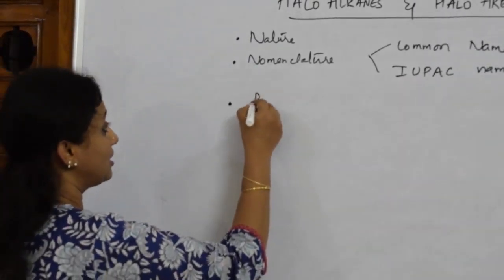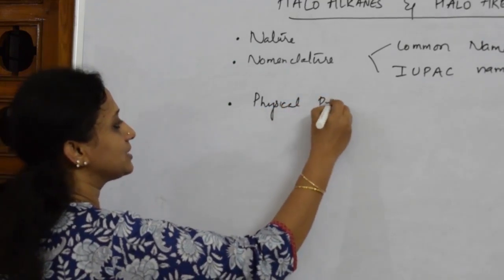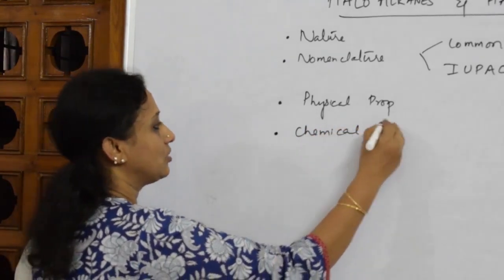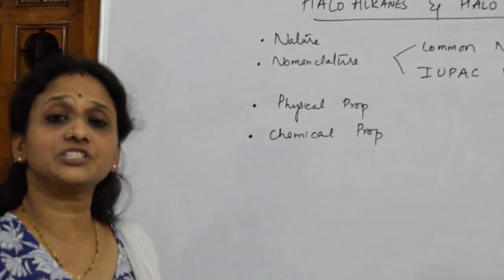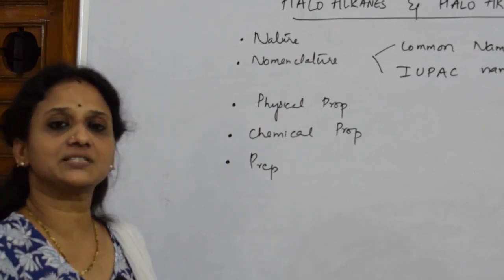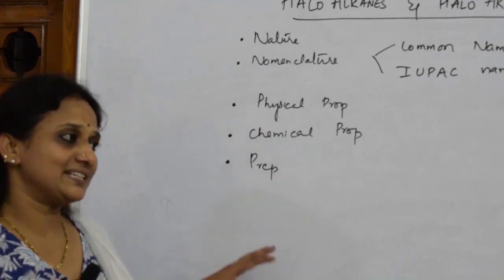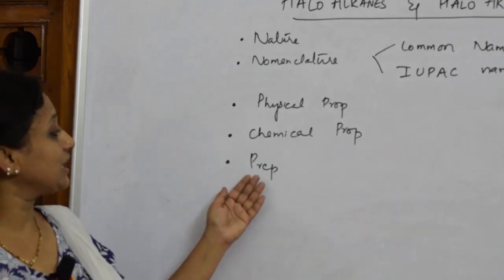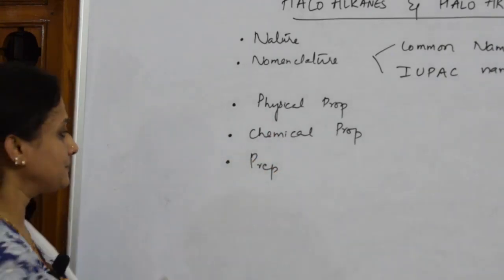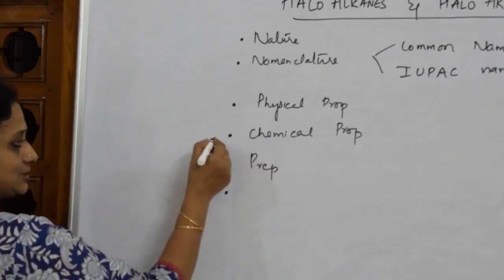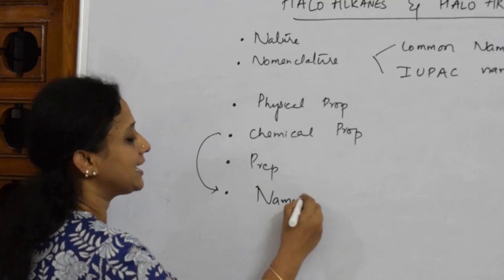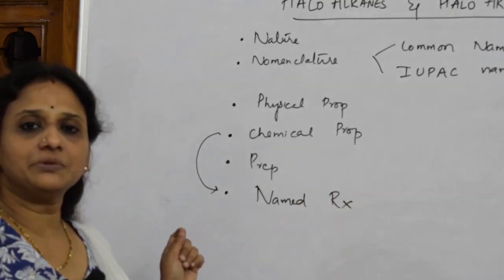After nomenclature, I should have a clear idea of the physical properties and also stress on chemical properties, which form the major part of the chapter. I need to learn the preparations — how these compounds are prepared from previous compounds. Most conversions can be learned from these topics, and name reactions are included within chemical properties.